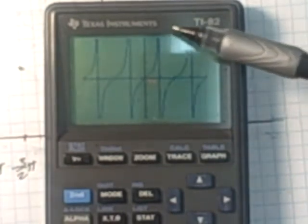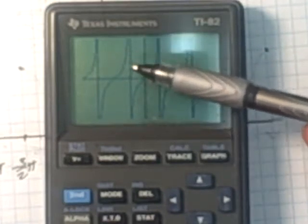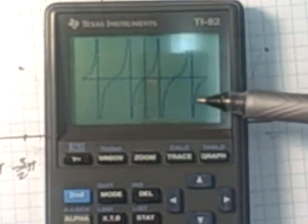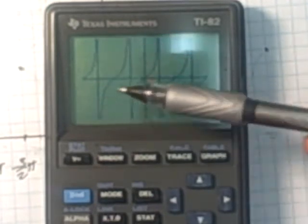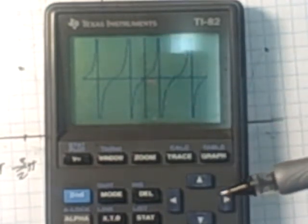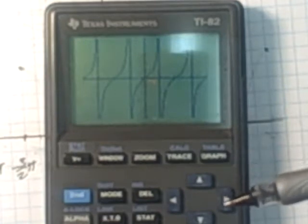You get the graph in here, and you get these straight up and down points. Now those are asymptotes, and what they represent are, if you know the tangent graph, that's where the tangent graph is being divided by 0.